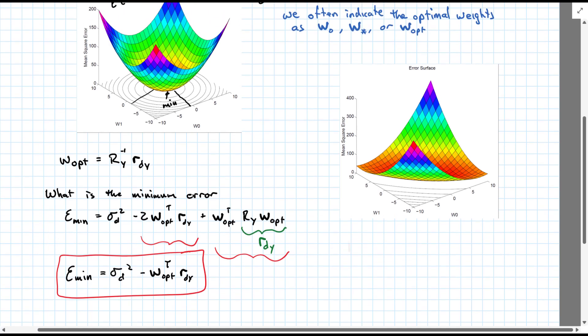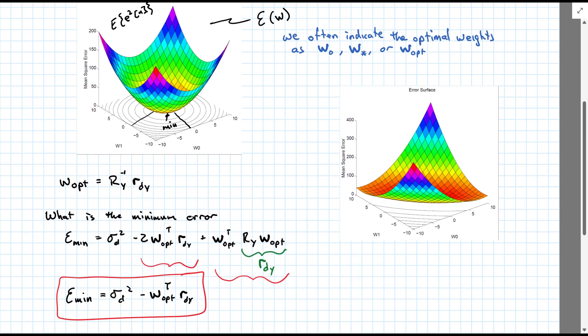To the extent that there's any correlation, we can decrease the error from just the variance of our prediction target. Next, we have these two error surfaces that we showed up above and looked at. One of them is, it looks like a nice bowl,